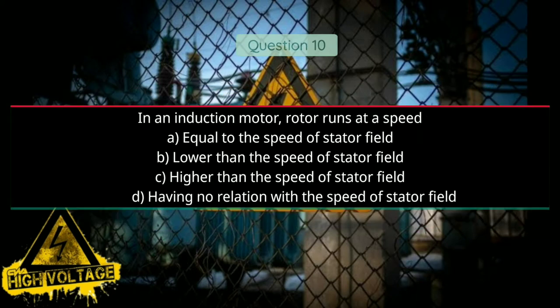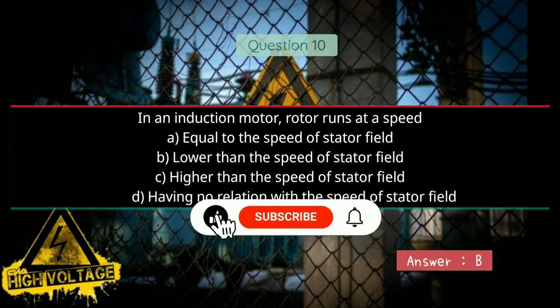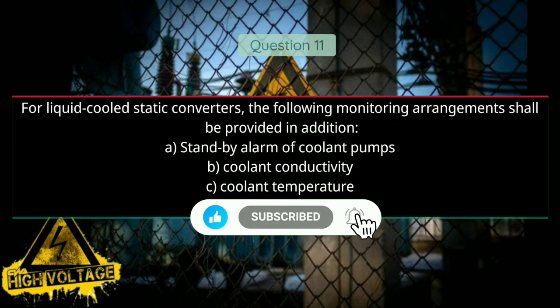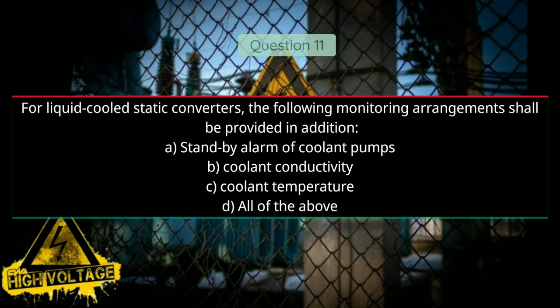Question number ten: In an induction motor, the rotor runs at a speed — Option A: equal to the speed of the stator field, Option B: lower than the speed of the stator field, Option C: higher than the speed of the stator field, and Option D: having no relation with the speed of the stator field. Correct answer will be B, lower than the speed of the stator field.